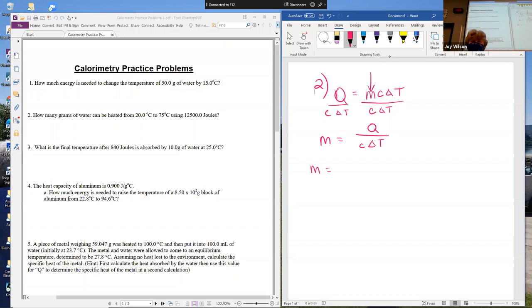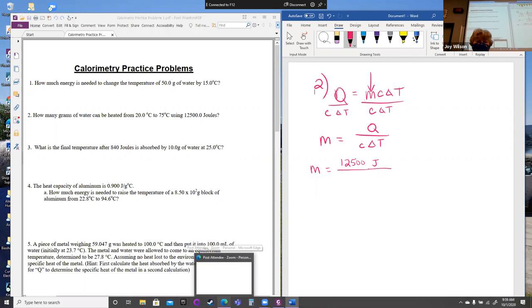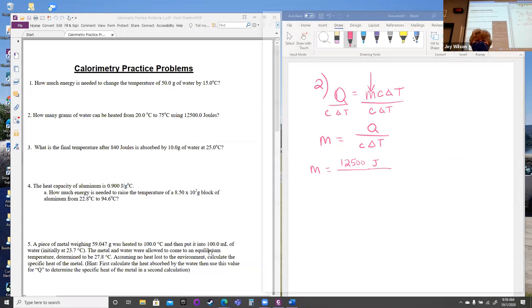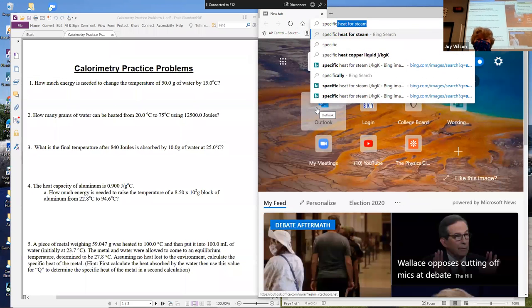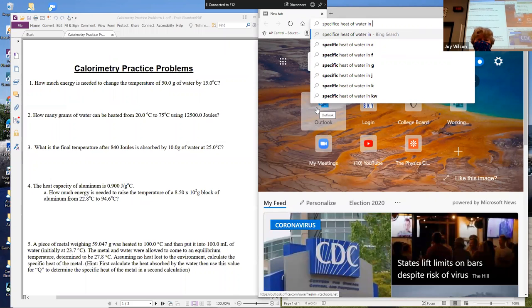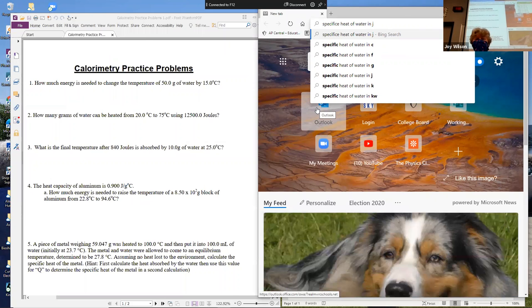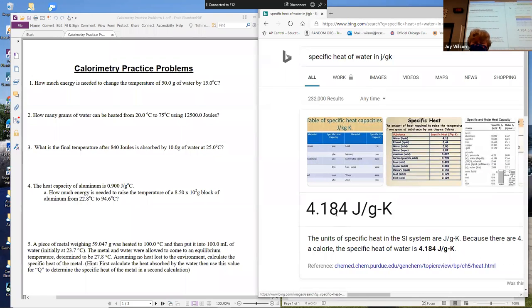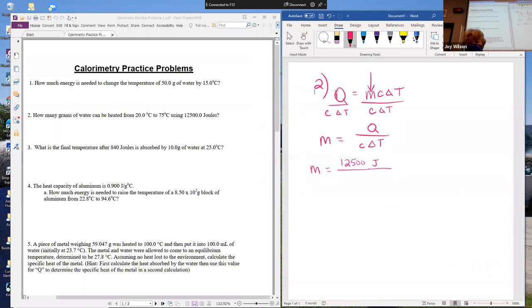So what is our Q value? What is our heat energy in the problem? Which number? The 12,500, and that's in joules. And now we need the specific heat of water. So we're going to come over here to our lovely Google and go specific heat of water in joules. Joules per kilogram Kelvin. 4.184 joules per kilogram Kelvin. So here we go. So C is 4.184 joules over kilograms and Kelvins.